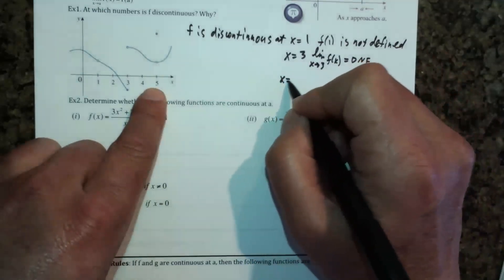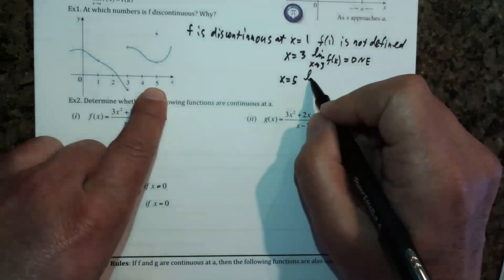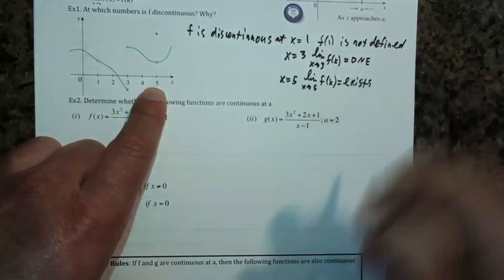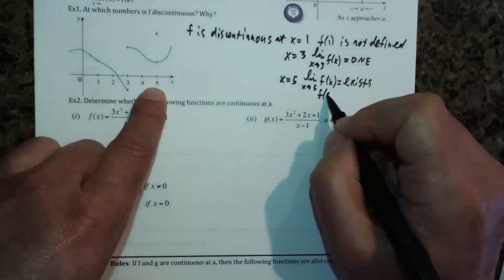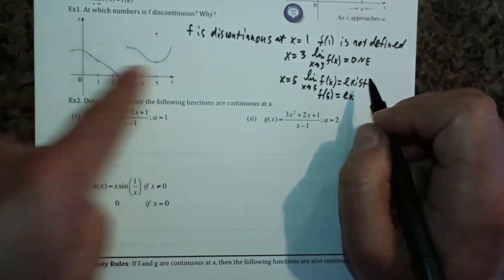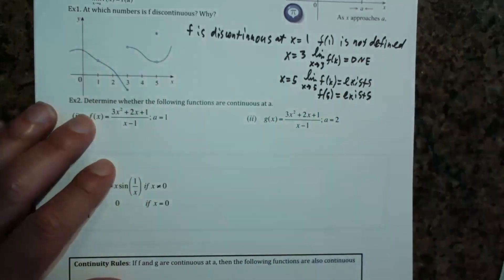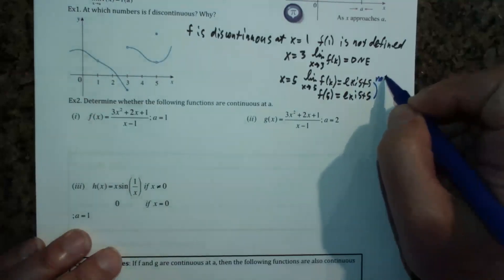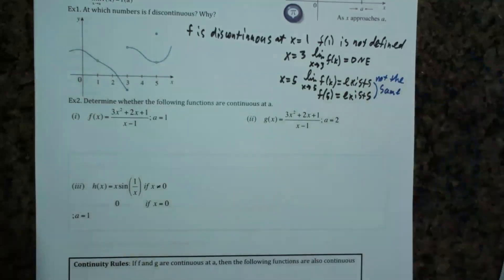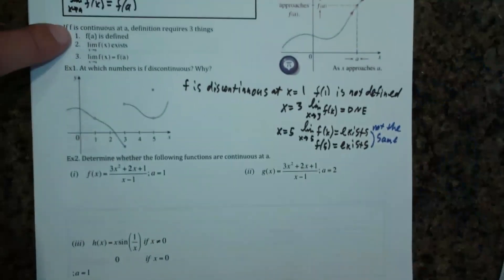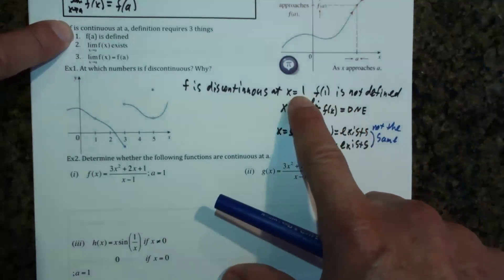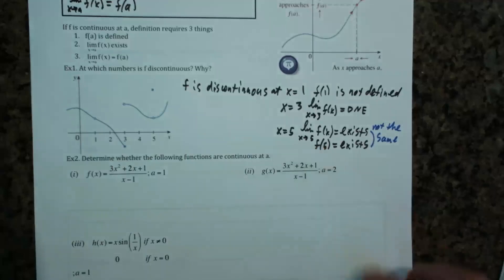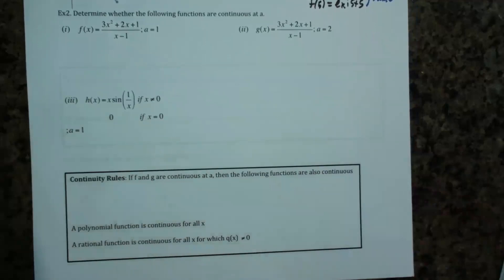We can also see at x equals five we have a problem. The limit as x approaches five exists, and F(5) also exists. However, these two values are different — the limit does not equal F(5) — so it is discontinuous there. To summarize: F(a) is not defined at x=1, the limit does not exist at x=3, and the limit does not equal F(a) at x=5.